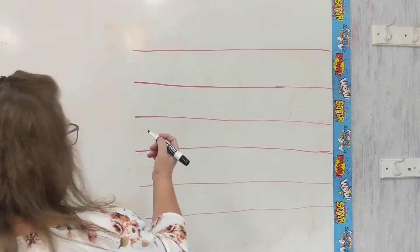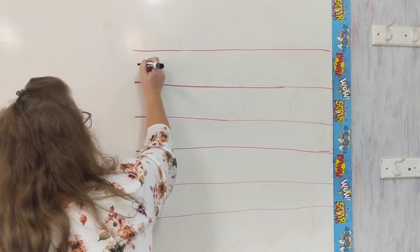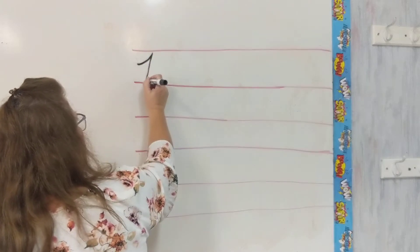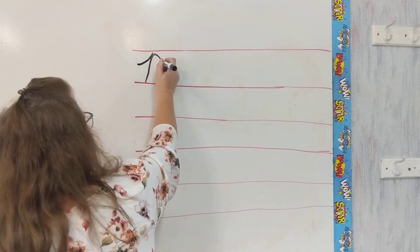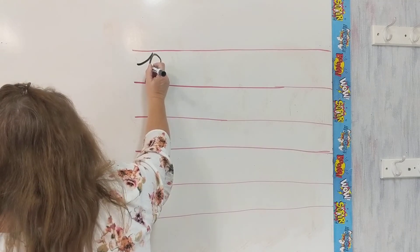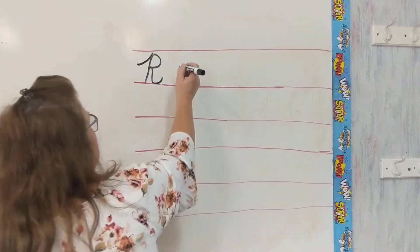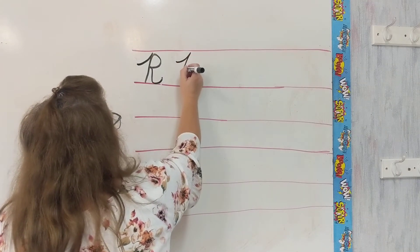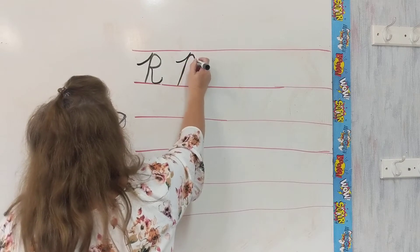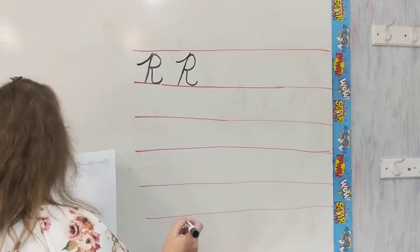So to make capital R and little r, we're going to start and loop around and come up. We're going to retrace back down as if we were making a P, but once we close it in right there, then we're going to turn and come down and loop-de-loop and swing out. And that is our capital R. Just like that.